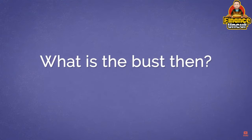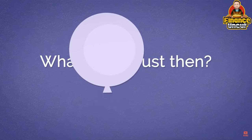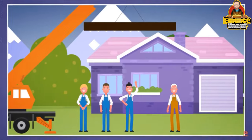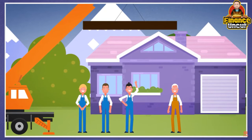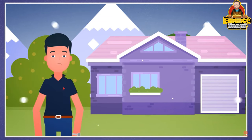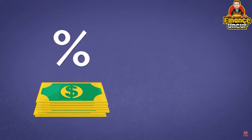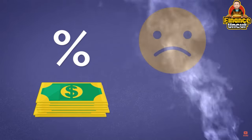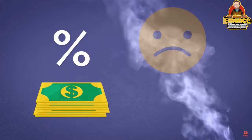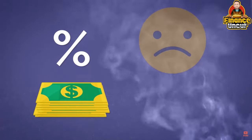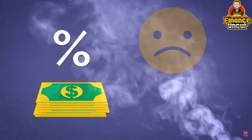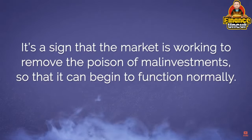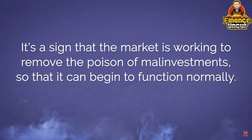What is the bust then? The boom cannot last forever — at some point it has to go bust. The interest rates have to go up eventually. When that time comes, entrepreneurs will realize that the investments they made are unsustainable. They will start to cut costs, fire people, and otherwise liquidate the investments. Artificially cheap credit is like a drug for a drug addict — it makes them feel great for a while, but the feeling doesn't last. The economic downturn after an artificial boom is the detox from the poison of cheap loans.